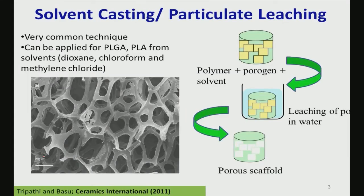Solvent casting or particulate leaching is a very common technique. You start with a base polymer and use a porogen — a sacrificial agent like sugar or salt crystals such as NaCl. After adding the porogen, you put it in water, leaching takes place, and this gives you a porous scaffold.